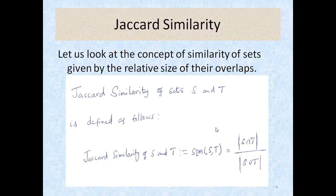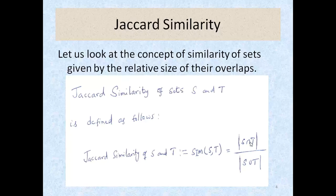The concept is based on a simple intersection and union of sets. If you have two sets, you can say they are similar if the overlap between them is large — that's the intersection of two sets. Jaccard similarity is defined as the size of S intersection T divided by the size of S union T. If there is no overlap at all, you get zero; if the sets overlap completely, this will be one.